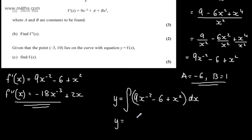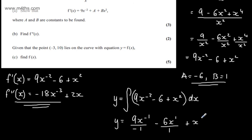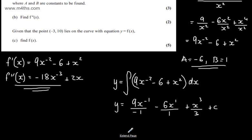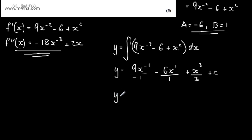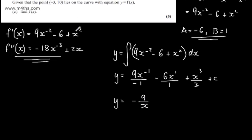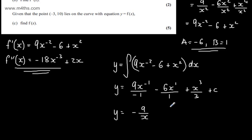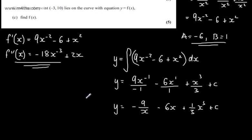So y equals 9x to the power of minus 1, divided by minus 1 — raising by a power and dividing by the new power — minus 6x to the power of 1 divided by 1, plus x to the power of 3 divided by 3, plus a constant of integration. Tidying this up, y equals minus 9 over x, minus 6x, plus one third x cubed, plus c.